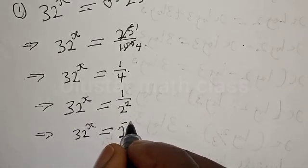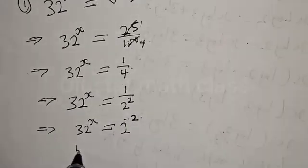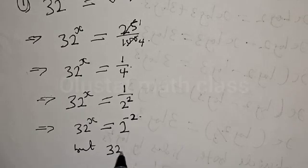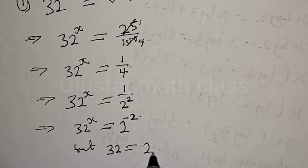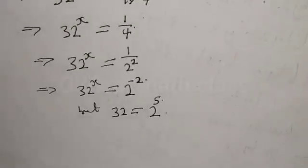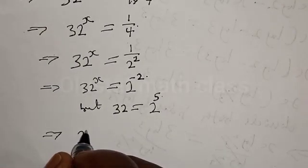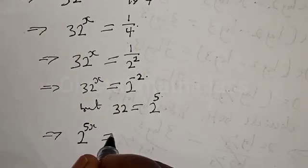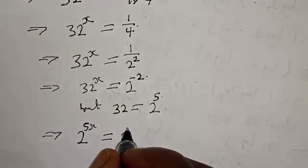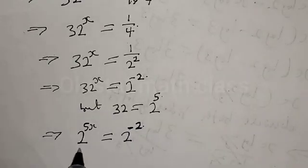So 1 over 2 squared can be written as 2 raised to power minus 2. Now, 32 can also be expressed as 2 raised to power 5. So we have 2 raised to power 5s equal to 2 raised to power minus 2. Since they have the same base — base 2 — the bases cancel.